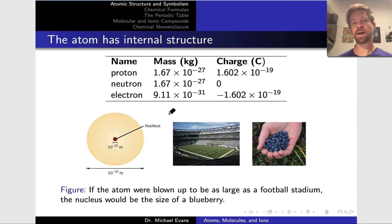Let's begin with atomic structure and symbolism. The first thing we need to note is that the atom has an internal structure. Atoms are the building blocks of matter, but within the atom we find different types of particles. At the center of the atom, we have the nucleus.